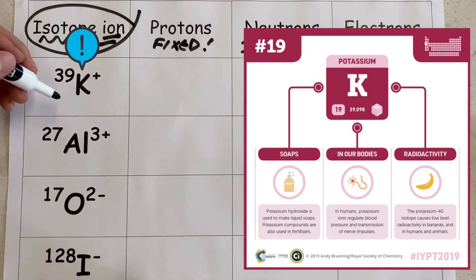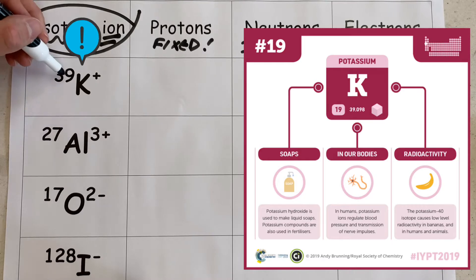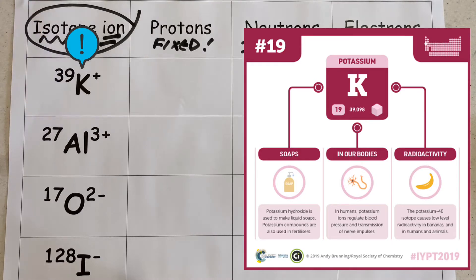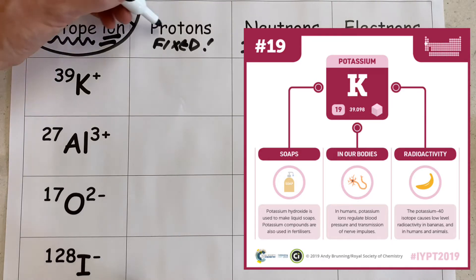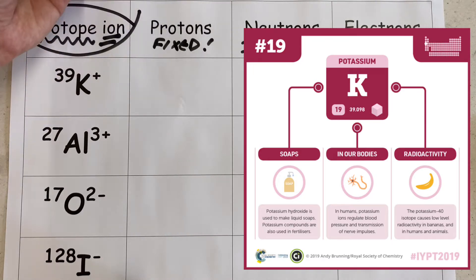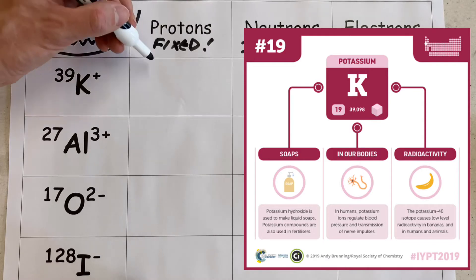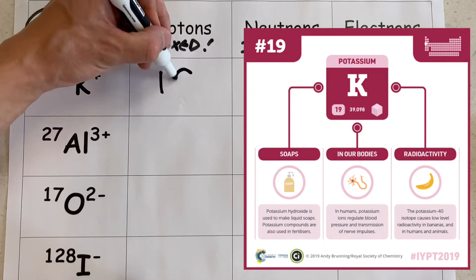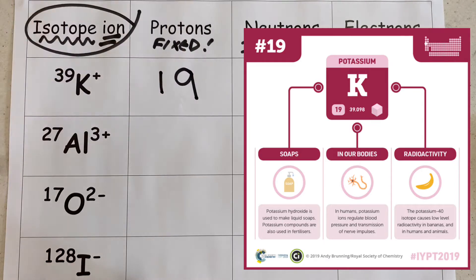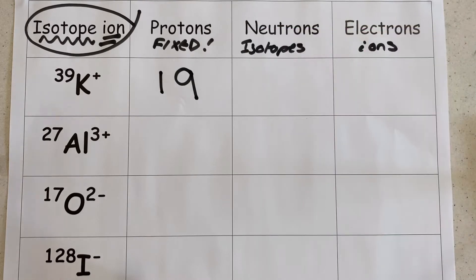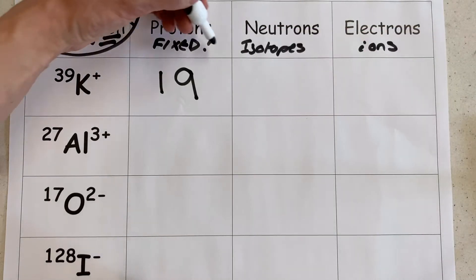Let's have a look at this example of a potassium ion isotope to get started with. Using a periodic table or this infographic from Compound Interest — lots of information about this in the video description — we can determine that the number of protons for potassium, which is fixed, is 19.